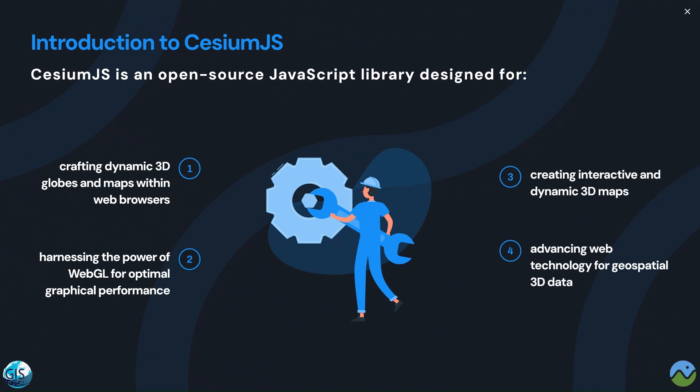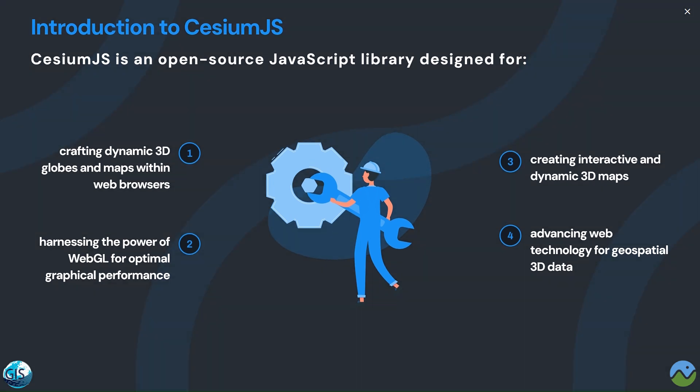CesiumJS is an open source JavaScript library designed for crafting dynamic 3D globes and maps within a web browser, harnessing the power of WebGL for optimal graphical performance, creating interactive and dynamic 3D maps, and advancing web technology for geospatial 3D data.